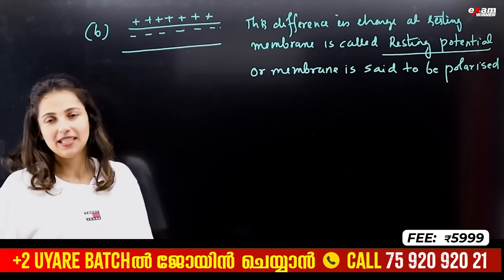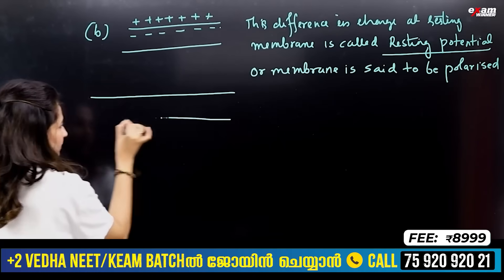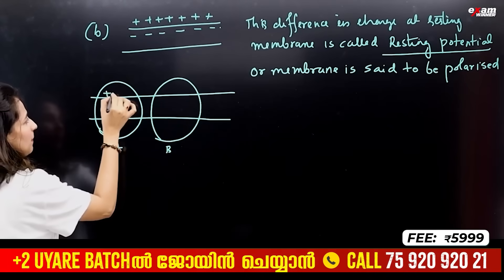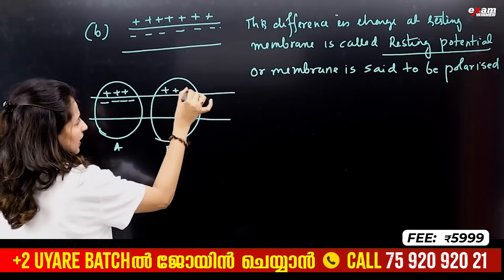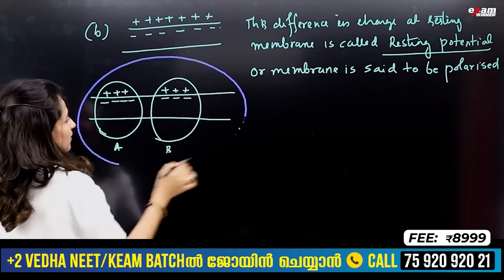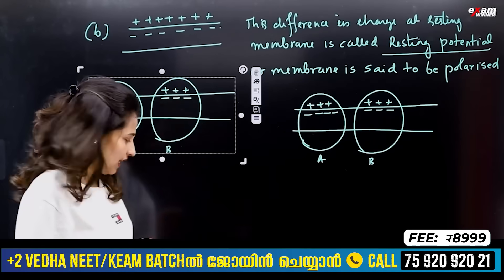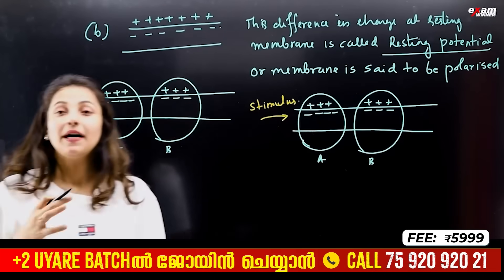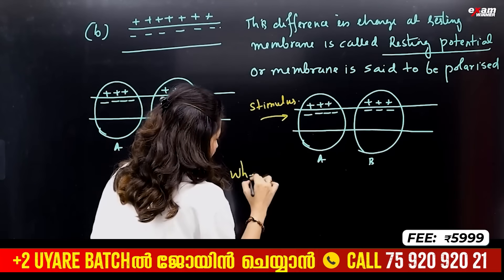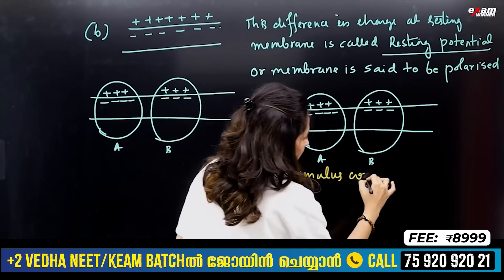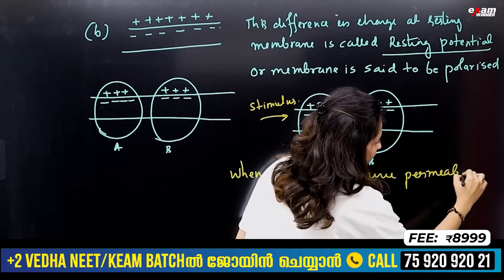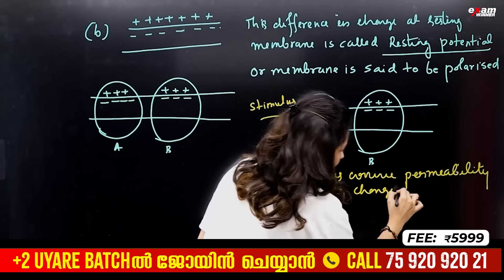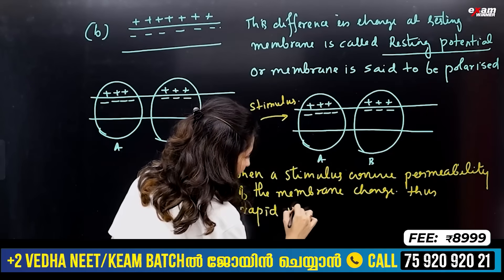When a stimulus comes to the axon, we consider two regions, site A and site B. At site A, when there is a stimulus, the permeability of the membrane changes, causing a rapid influx of sodium ions into the membrane.